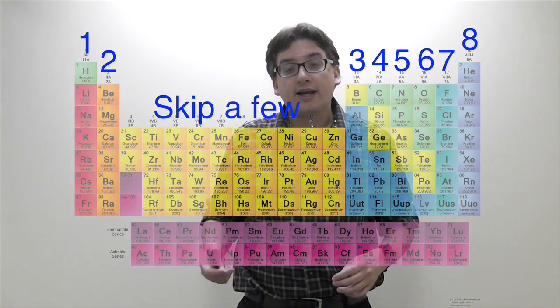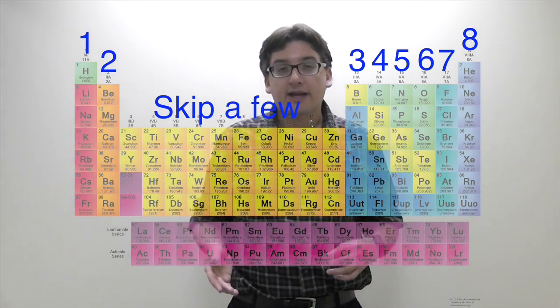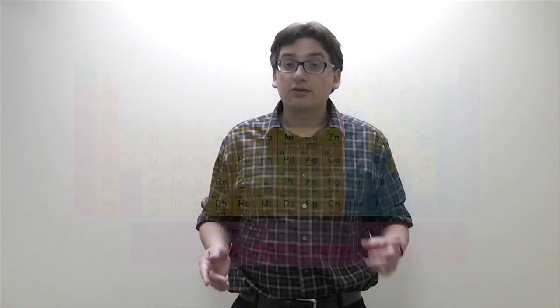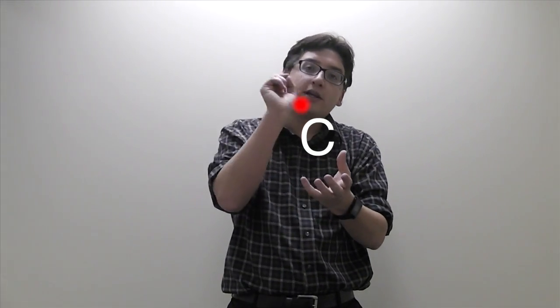And so when we draw an atom, we're using a Lewis diagram, which we're going to see a lot of later. For example, if I want to draw carbon in a Lewis diagram, that means you're only drawing the valence electrons, and remember carbon has four valence electrons, people often go one, two, three, four, and that's incorrect.